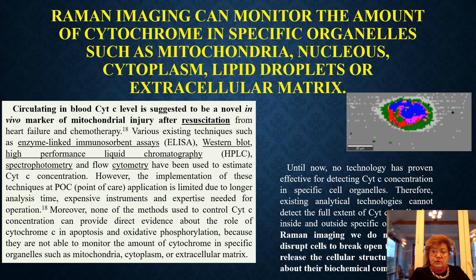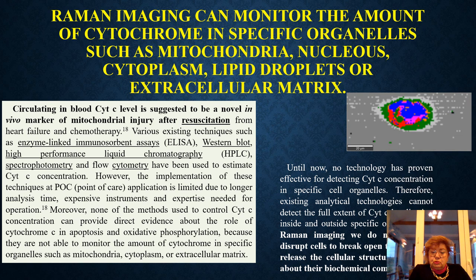Existing analytical technologies like ELISA, western blot, liquid chromatography, or flow cytometry cannot detect the full extent of cytochrome concentration inside and outside specific organelles. So they cannot provide direct evidence about the role of cytochrome C in apoptosis and oxidative phosphorylation, because they are not able to monitor the amount of cytochrome in specific organelles such as mitochondria, cytoplasm, or extracellular matrix.